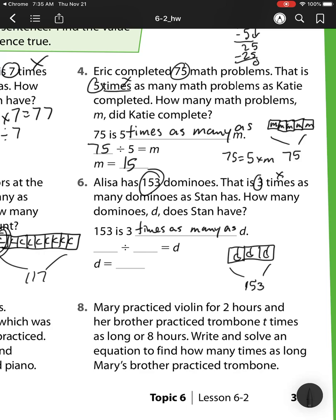So I need to do 153 divided by 3. So I have 153 divided by 3. 3 goes into 15 five times. 5 times 3 is 15. Subtract. Check. 0 is less than 3. So I can bring down. 3 goes into 3 one time. Multiply 1 times 3 is 3. Subtract. 0 is less than 3. There's nothing to bring down. So my answer is 51.